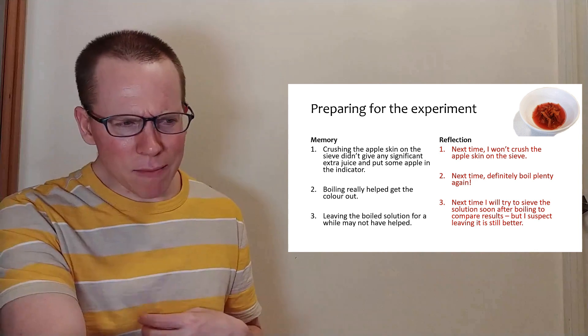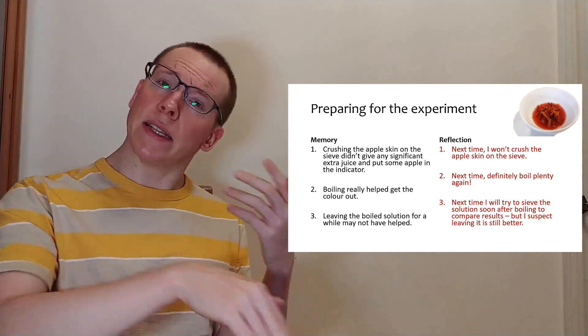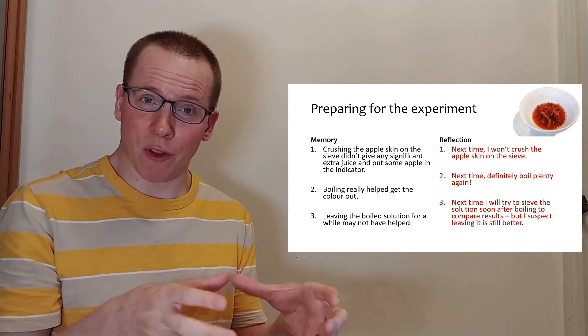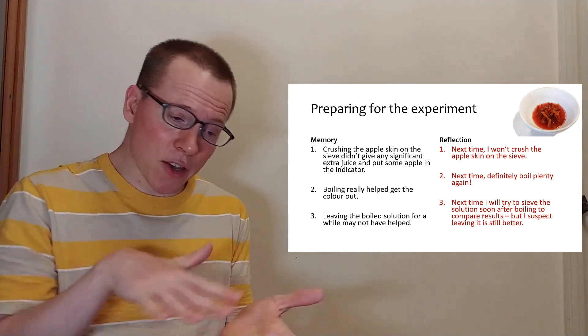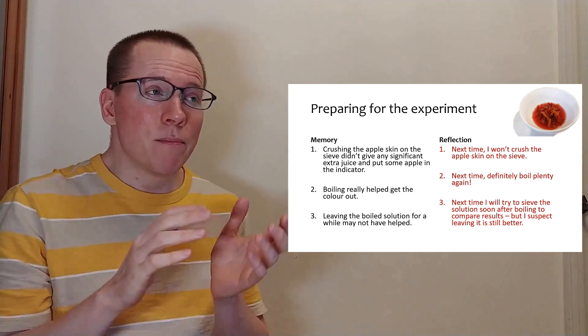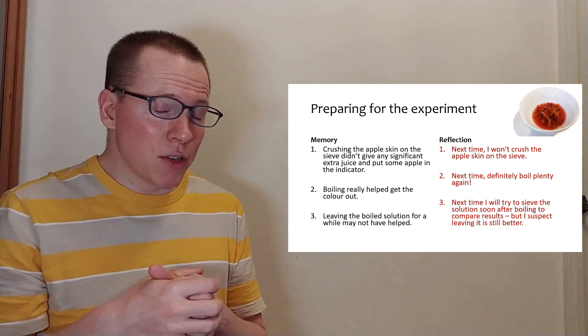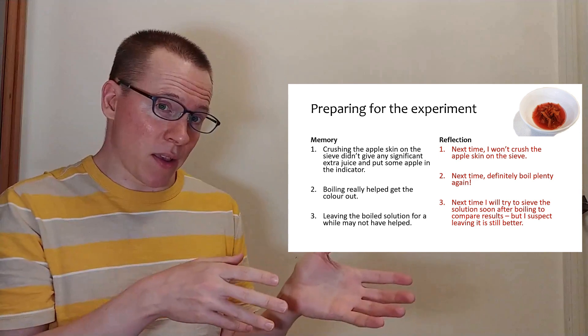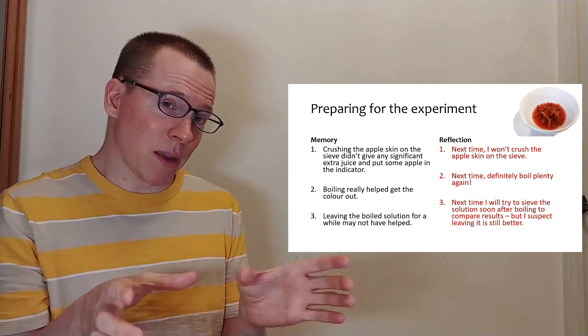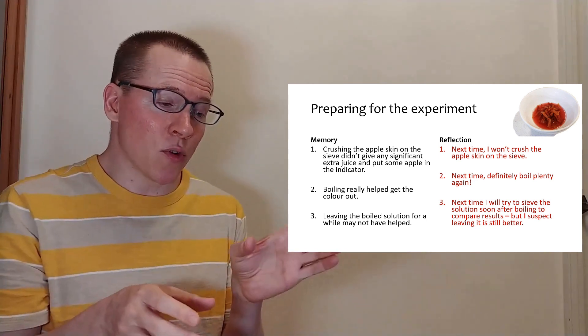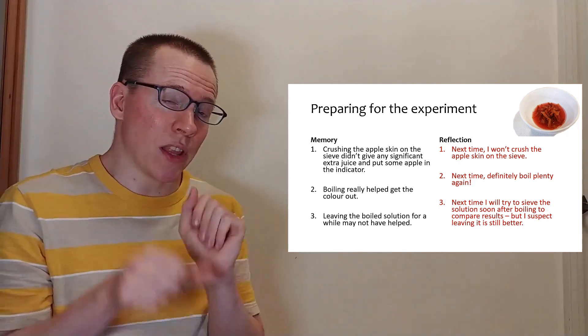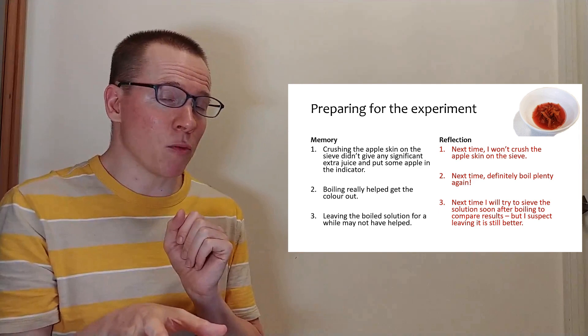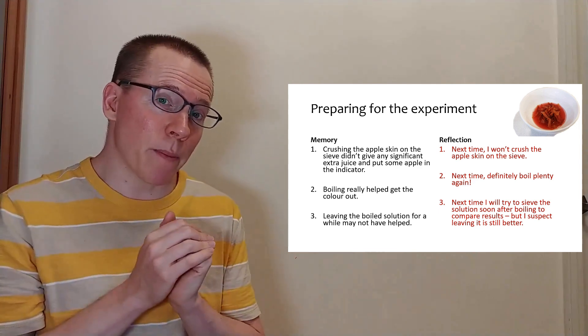And next time I'm just going to try it differently. I think that leaving it for a long time after I boiled it did help. And I think the color just became uniform. But I would like to try it the other way as well. And then maybe next time I could try two experiments. One where I just take the indicator fairly soon after boiling, and one where I leave it for a while and I can see which one gives me a better indicator.